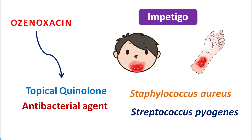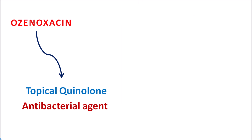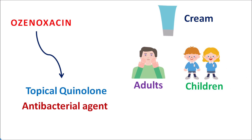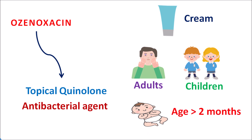This drug is one of the quinolone antibacterial agents and it is available as a cream. Since impetigo can be observed in both children as well as adults, this drug can be used in both adults and children, and even for pediatric purposes. So even in newborns with age greater than two months, ozenoxacin can be used to treat impetigo.